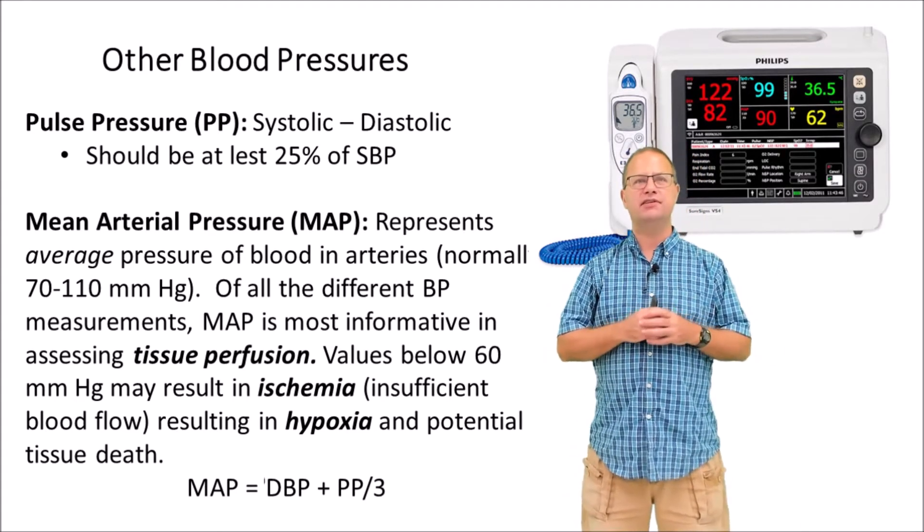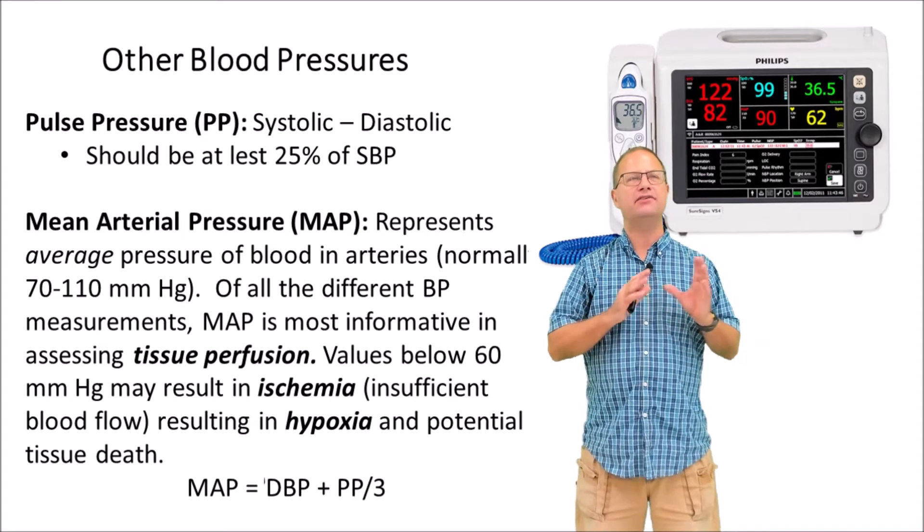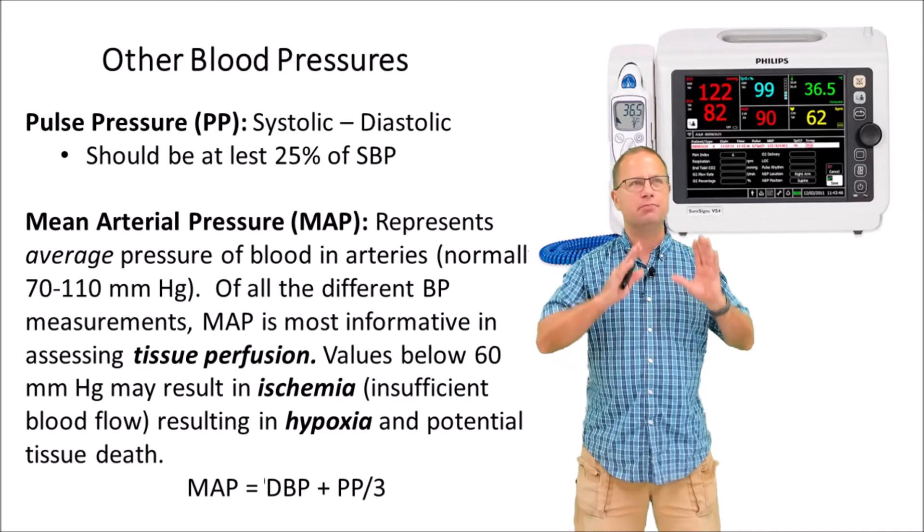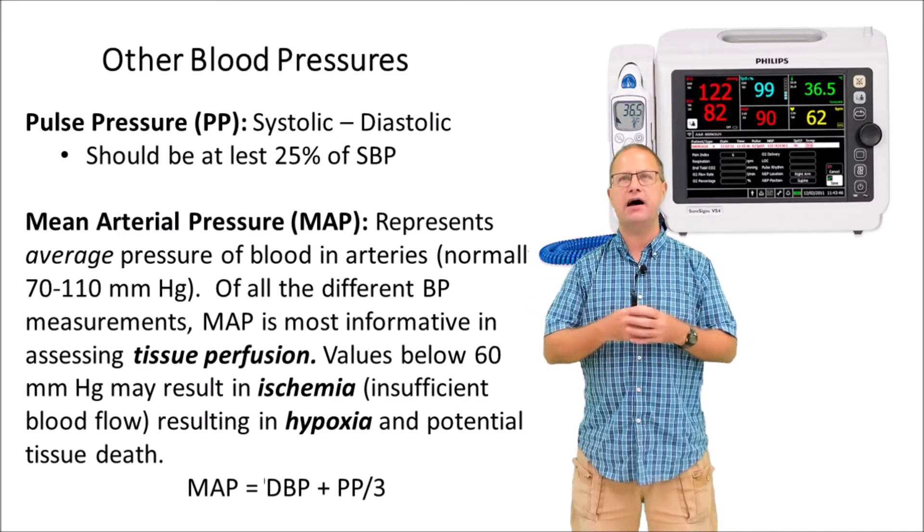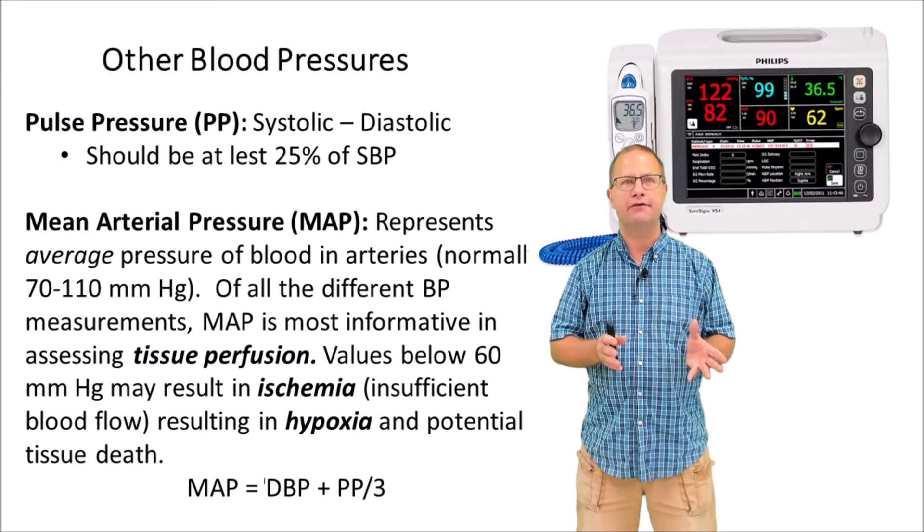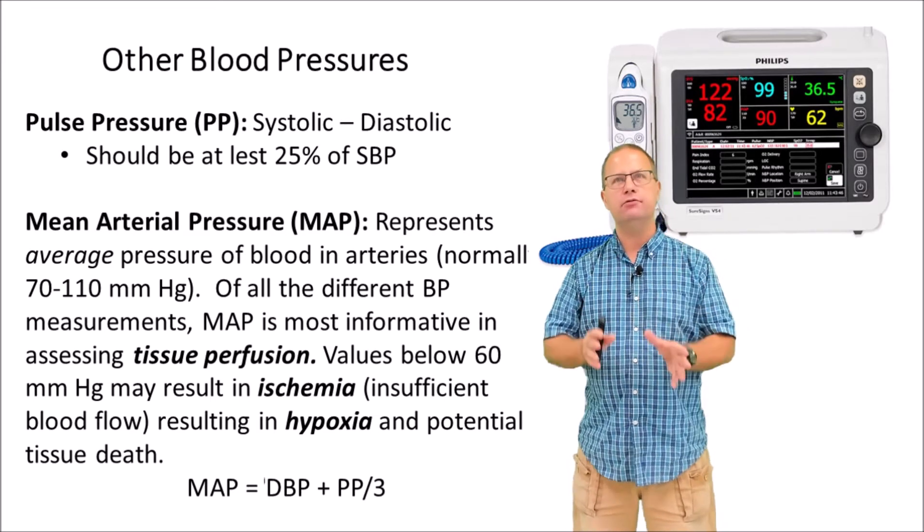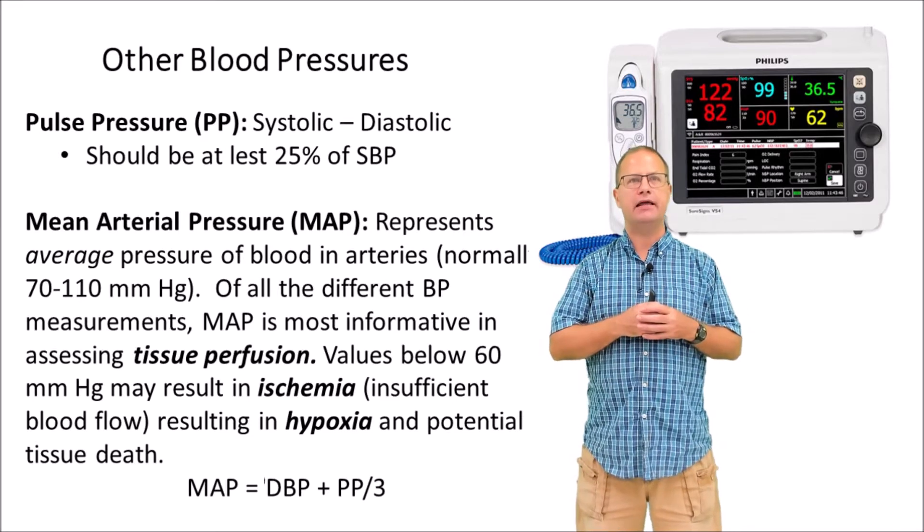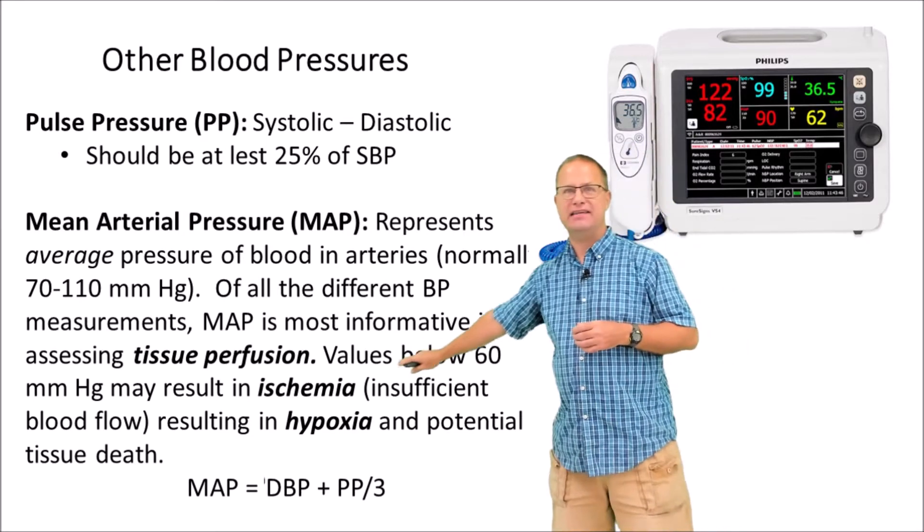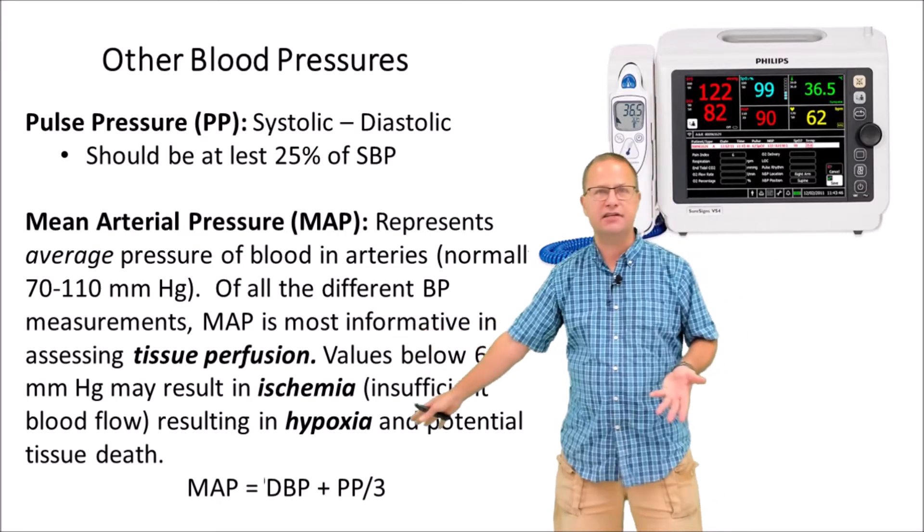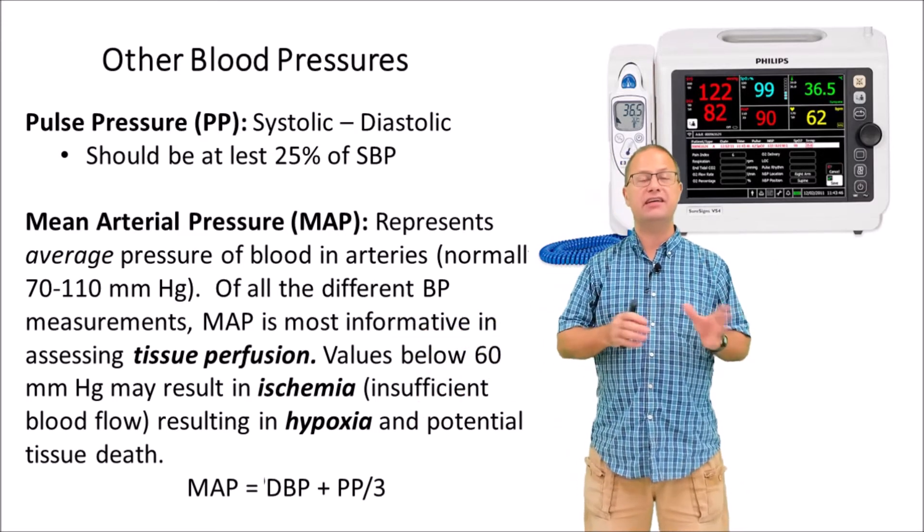Of all the different blood pressure measurements, MAP is most informative about tissue perfusion. What does tissue perfusion mean? It means supplying the tissues, all the tissues in the body, with adequate amounts of oxygenated blood to keep them alive. If our MAP drops too low, that pressure is no longer getting blood to all the tissues of the body. Some of those tissues are going to become ischemic, they're going to have insufficient blood flow, they're going to become hypoxic, lack of oxygen, and they're eventually going to die.